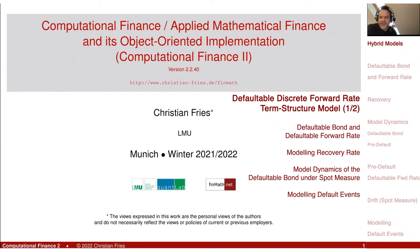Today I would like to discuss the defaultable version of our discrete forward rate model. Using the historic term for the forward rate, the LIBOR, this is called in the literature the defaultable LIBOR market model. The formulas on the slides are maybe a little bit complicated, and there is also a little bit more to the modeling here.